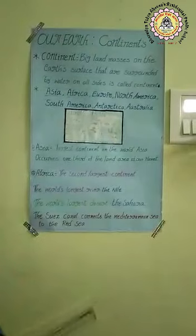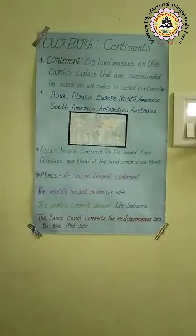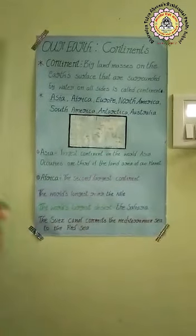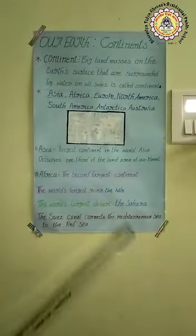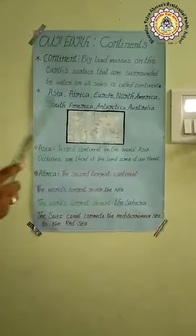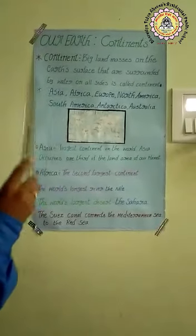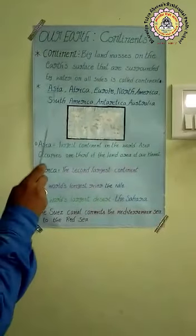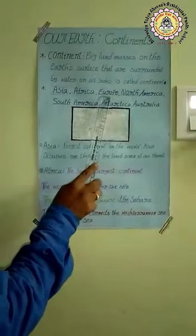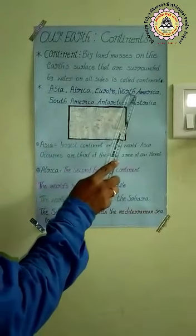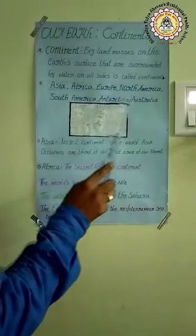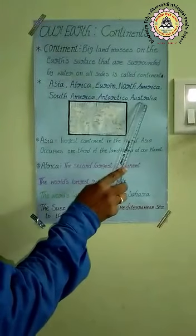How many continents are there? There are seven continents. What are the names of the seven continents? They are: Asia, Africa, Europe, North America, South America, Antarctica, and Australia.